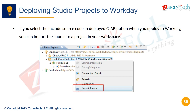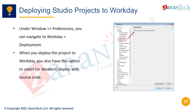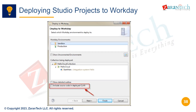When deploying to Workday, you can select the option to include source code in the CLAR, which allows later importing the source into Studio projects. To always deploy with source code, go to Window > Preferences, then under Workday > Deployment, select the option. This will include source for all deployments. Here you can see the Workday Studio preference to always deploy integrations with source code included, which allows round-tripping if needed.